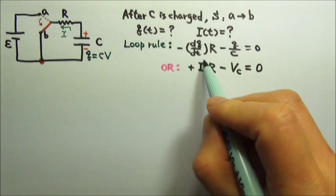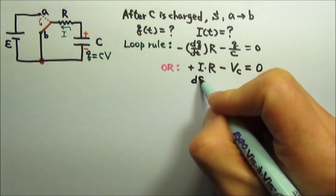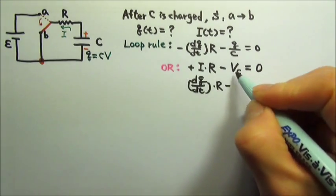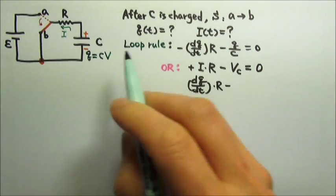And then we can replace I with dQ/dt, and the voltage across the capacitor will be Q over C.